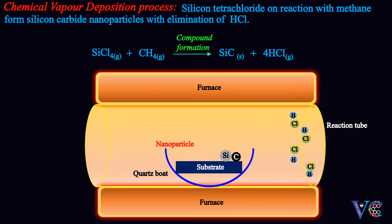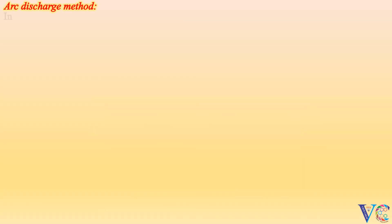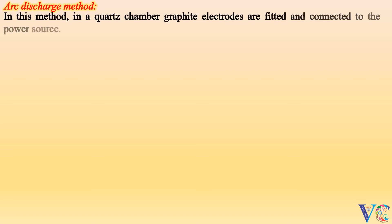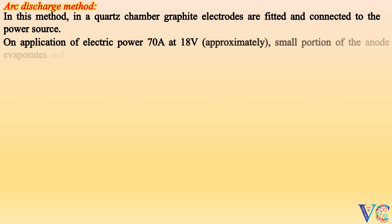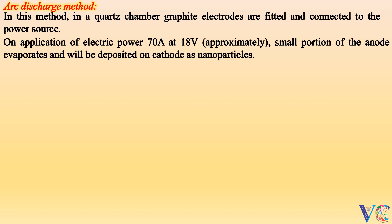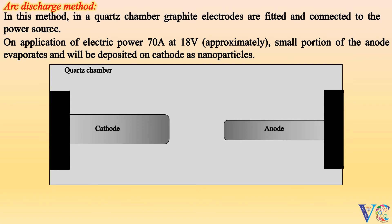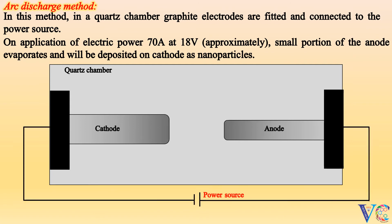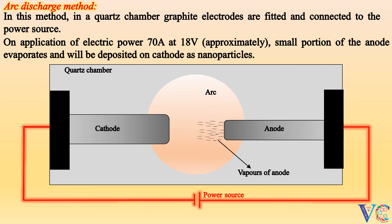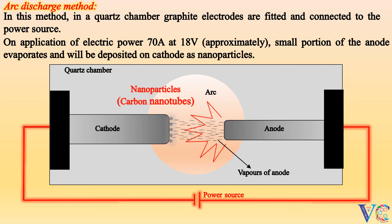In the arc discharge method, graphite electrodes are fitted in a quartz chamber and connected to a power source. On application of electric power — approximately 70 amperes at 18 volts — a small portion of the anode evaporates and is deposited on the cathode as nanoparticles. Graphite is used as both cathode and anode.